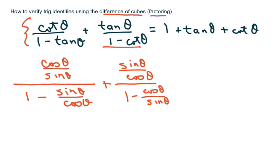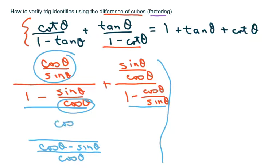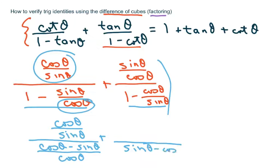The next step is to write each of these pieces with a common denominator. For this first piece, you're going to get cosine of theta minus sine of theta over cosine of theta. Then for the second piece, you're going to get sine of theta minus cosine of theta over sine of theta.